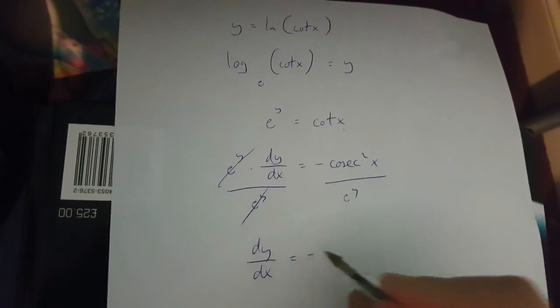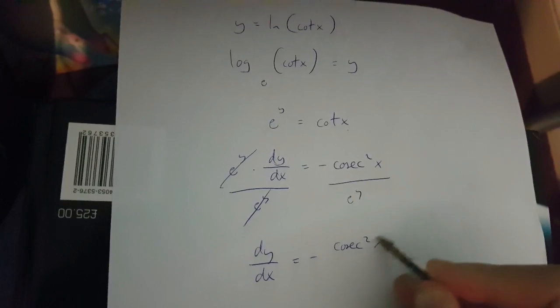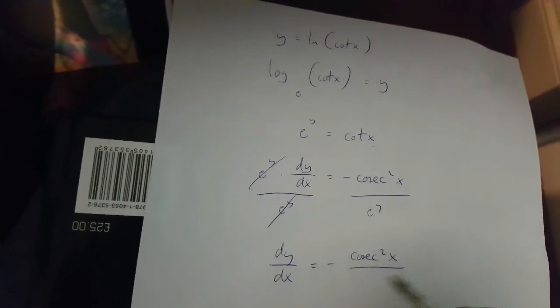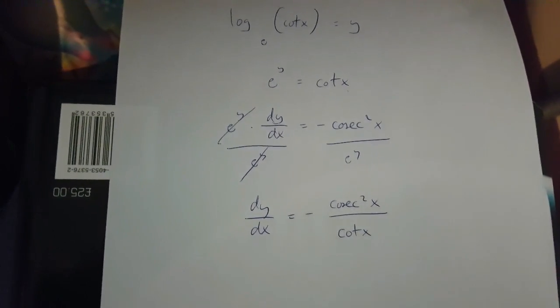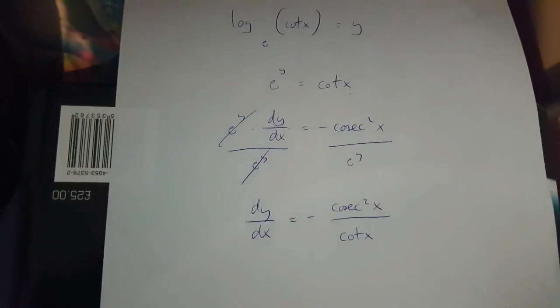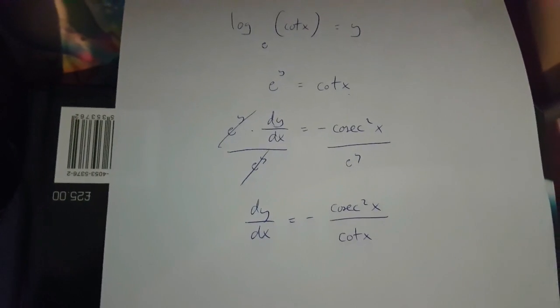So, dy over dx is minus cosec x squared over cotx. And this is the proof, or actually, this is the derivative that you'll probably find online.